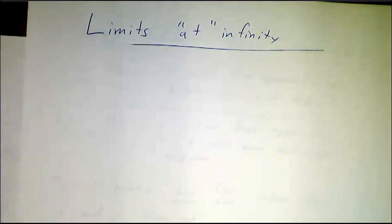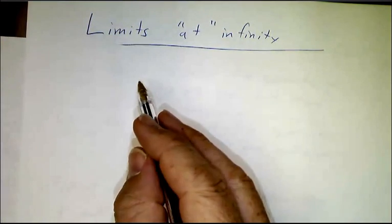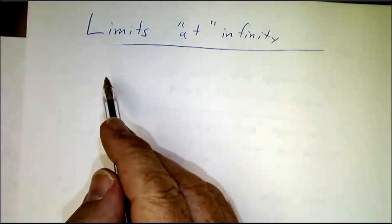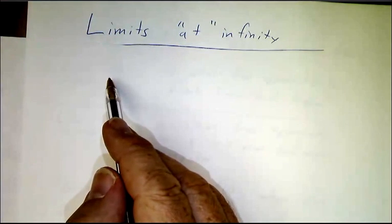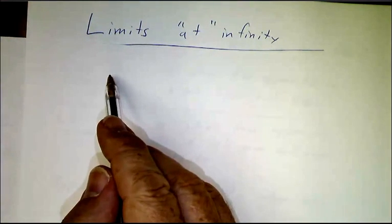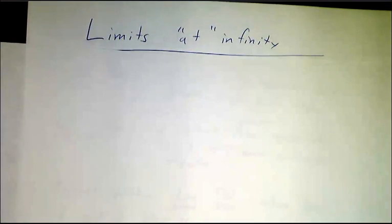Last time we saw that limits at infinity had to do with horizontal asymptotes. Whenever you have a limit as x goes to infinity of a function being L, you get a horizontal asymptote at x equals L.